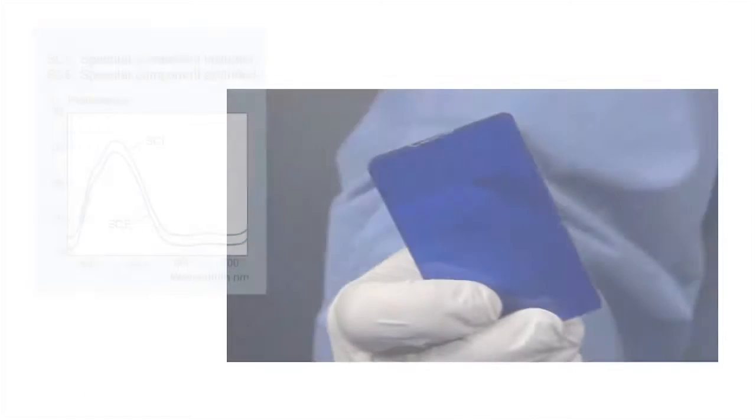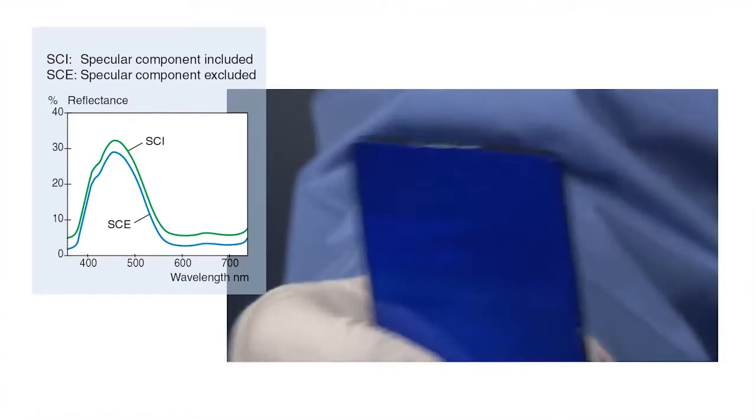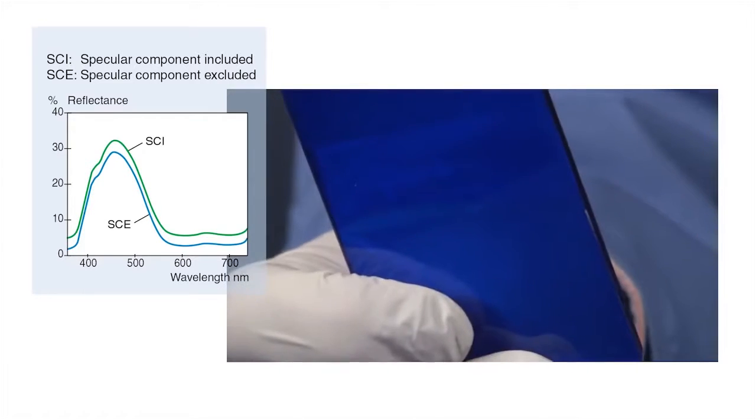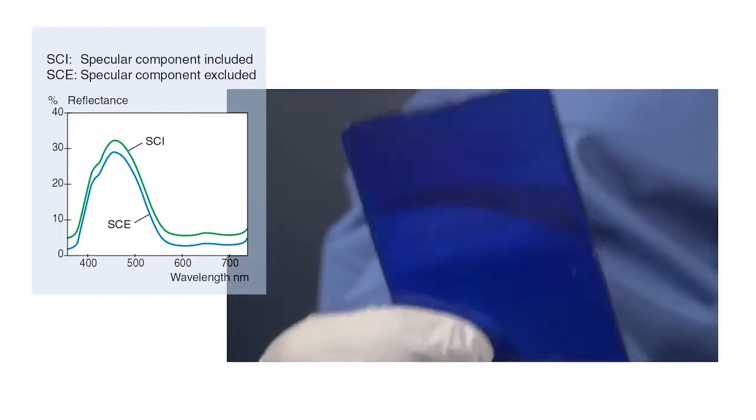By using two xenon lamps, the system can provide simultaneous color measurement results for specular components included, SCI, and specular components excluded, SCE, with just a single measurement.